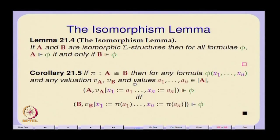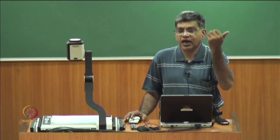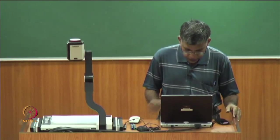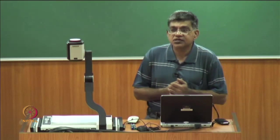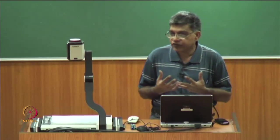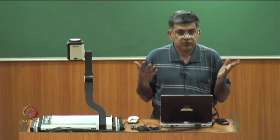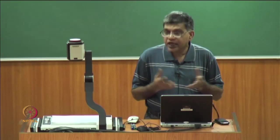The valuation function for all variables outside the free variable set of phi is actually unimportant. The isomorphism only needs to be preserved for the subset of free variables occurring in the formula. This means for any set of formulae capital phi, structure A is a model of capital phi if and only if structure B is a model of capital phi. Therefore, using just first-order formulae, one cannot distinguish isomorphic structures — unlike the density formula which distinguished the rationals from the integers.